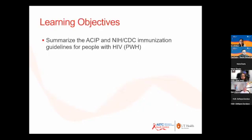The learning objective for today is to summarize the ACIP, NIH, and CDC immunization guidelines for people with HIV. We're going to talk about some differences between the ACIP and the NIH immunization guidelines — data is interpreted differently by these public agencies, so sometimes you'll see differences in recommendations depending on the resource that you're reviewing.